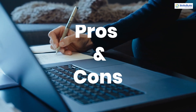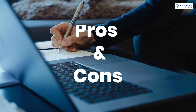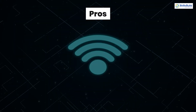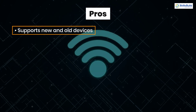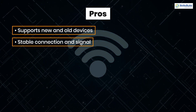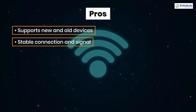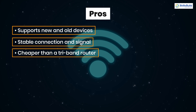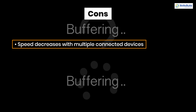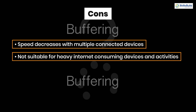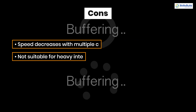A dual-band router is suitable for a home where the distance of devices from the router is not far and the speed requirement is optimal. In terms of pros, dual-band routers support new and old devices equally, and we get a stable connection and stable signal. They are also much cheaper than tri-band routers. In terms of cons, speed decreases when multiple devices are connected, and it is not considered suitable for activities that consume heavy internet.